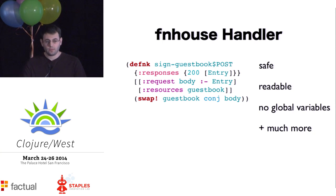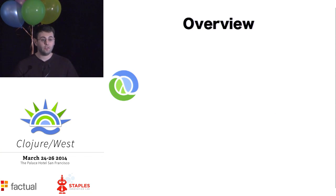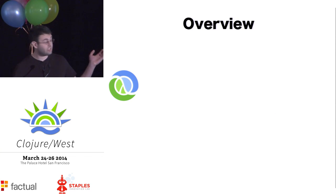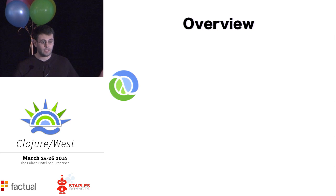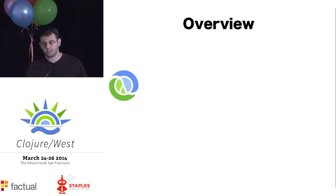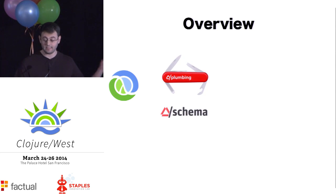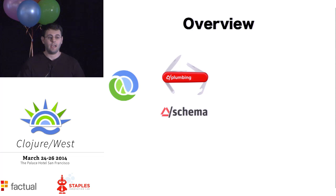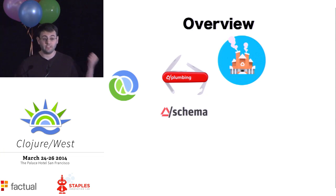So this is the overview of the talk. We're going to start with closure functions, annotate them with Prismatic's open-source libraries, plumbing and schema, and then we're going to pull off those annotations using Funhaus.